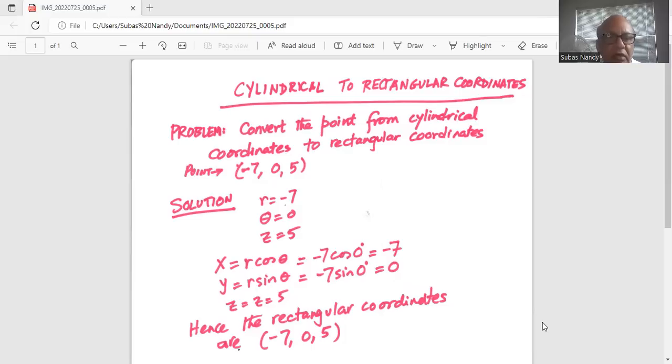So x is equal to r cosine theta is equal to minus seven cosine of zero which is one. So x is minus seven.